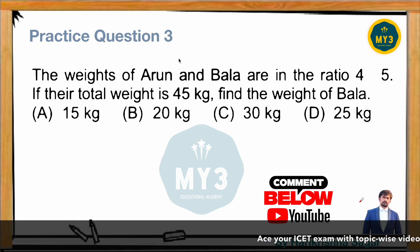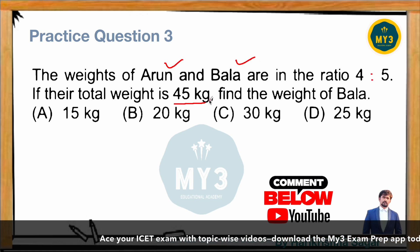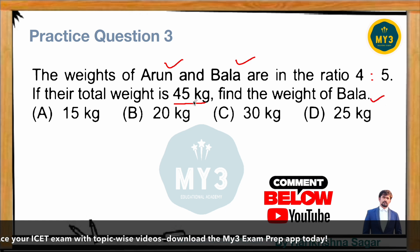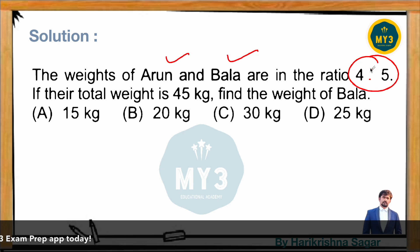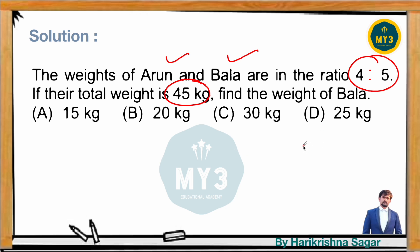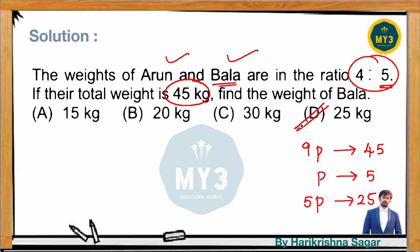Next question: the weights of Arun and Bala are in the ratio of 4:5. If the total weight is 45 kg, find the weight of Bala. As I told you, look at the number available and connect it with the equivalent parts. Here the ratio is 4:5, so 4 parts and 5 parts. The total weight is 45 kg, so Arun and Bala together are 4 + 5 = 9 parts. This 9 parts value is 45, so one part value is 5. Bala's weight is 5 parts, so 5 × 5 = 25 kg, which is option D.